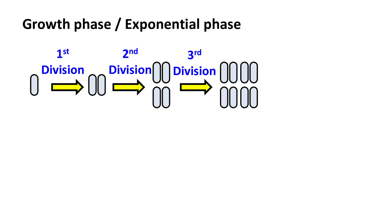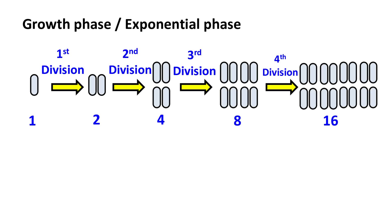Let's understand exponential phase of the growth curve in more detail. Suppose there was one cell and it divides itself into two. With time, two becomes four, four becomes eight, eight becomes sixteen and so on.